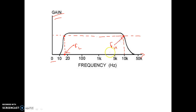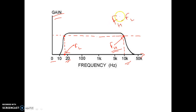This point corresponds to FH. The FH value is nearly 10K, that means 10,000, and the lower cut-off frequency is only 20, lower than 20. What is bandwidth? We know that bandwidth equals higher cut-off frequency minus lower cut-off frequency. Basically, as FH is very much greater than FL, we can assume that bandwidth is approximately equal to higher cut-off frequency FH.